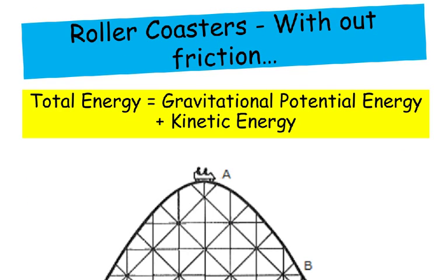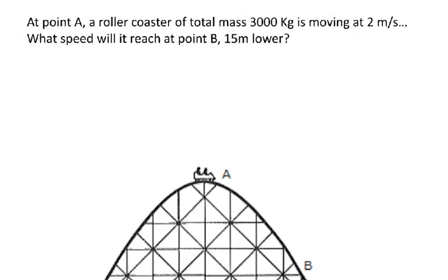So when dealing with roller coasters without friction, the total energy at any point is equal to the sum of the gravitational potential energy and the kinetic energy at that point. So let's apply this to a problem.